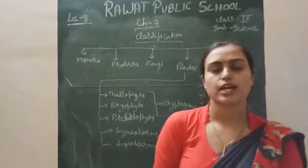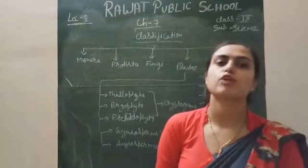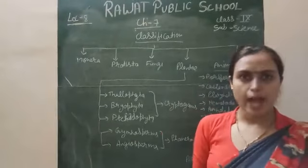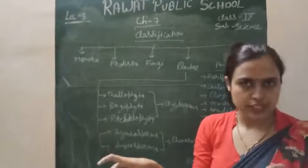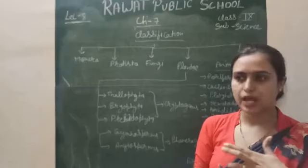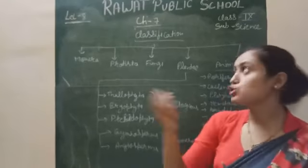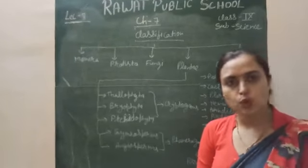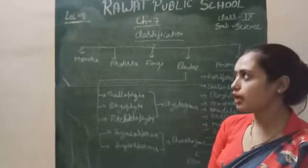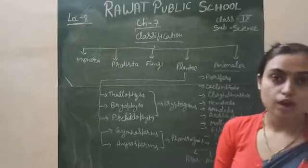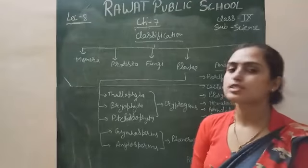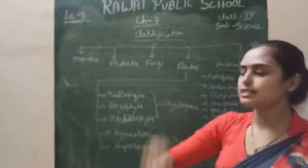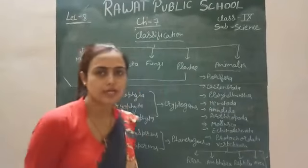We started our 7th chapter, Diversity of Living Organisms, from the classification. Classification means we classify living organisms into various categories on the basis of their function and for simplification, to understand the different types of animals and their characters simply. We classified living organisms into 5 categories, called the 5-kingdom classification, which was given by Whittaker. This is the most accepted classification.